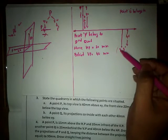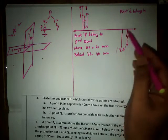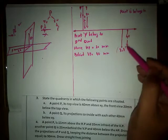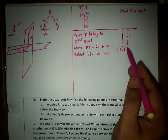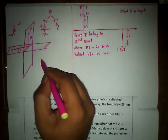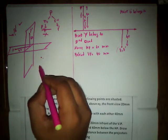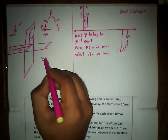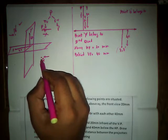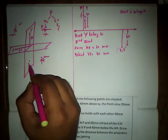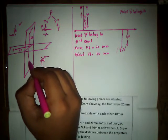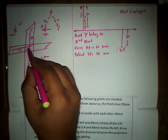Both projections are away from the XY reference line and neither lies on it, so the point lies in space. This clearly designates the point as belonging to the fourth quadrant. Placing point Q there: the front view Q dash appears below the XY reference line.